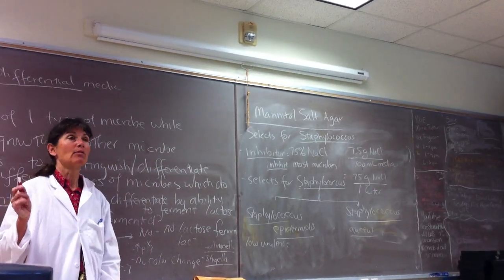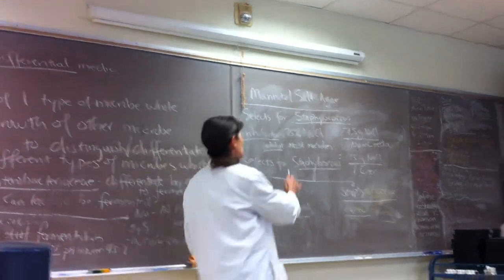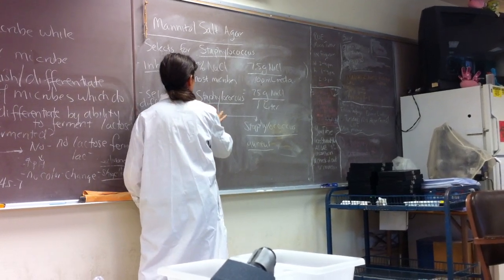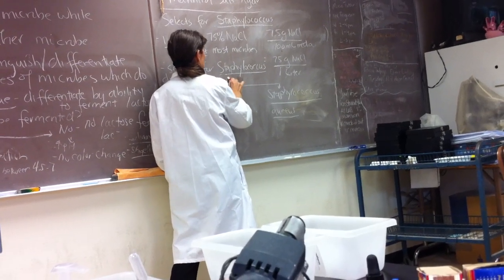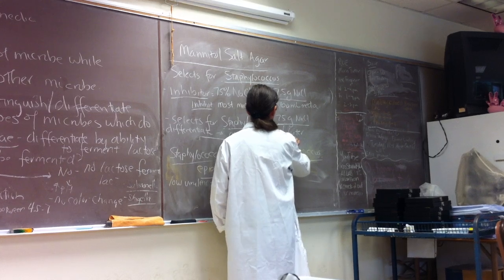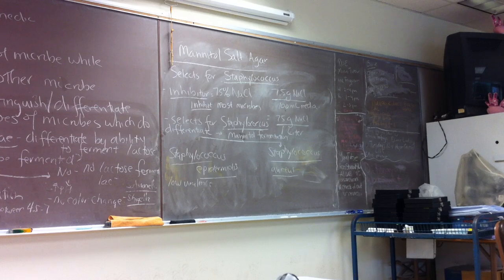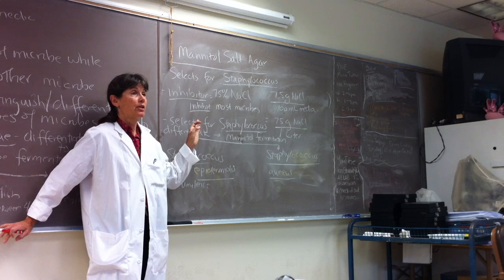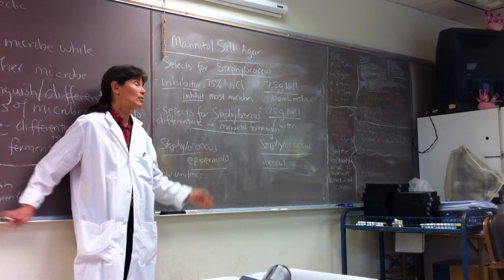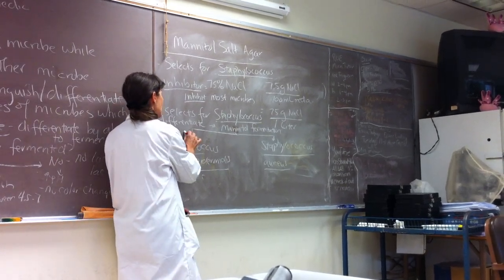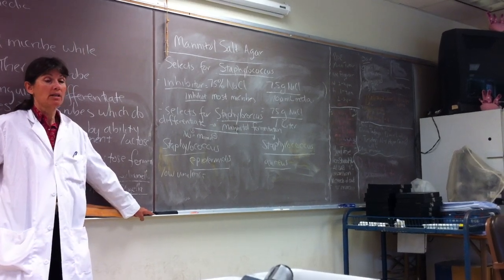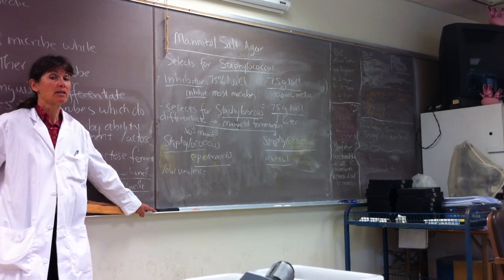So both these guys grow very happily on mannitol salt plate. So how can we differentiate them? And this is where the differential media of MSA comes in. So we can differentiate them in their ability to ferment mannitol. Mannitol is what's called a sugar alcohol. So we're going to differentiate these two guys by using mannitol fermentation. So mannitol salt agar is also differential because we can distinguish between Staphylococcus that can ferment mannitol, distinguish them from Staphylococcus that can't ferment mannitol. And it turns out that Staphylococcus epidermidis cannot ferment mannitol. So we can just call it mannitol negative. So as a consequence, the pH doesn't drop.